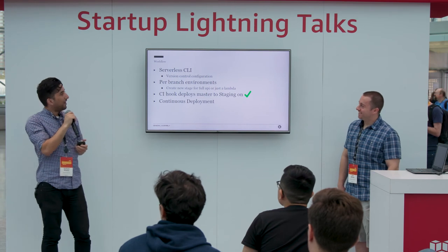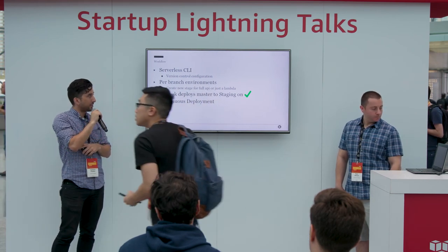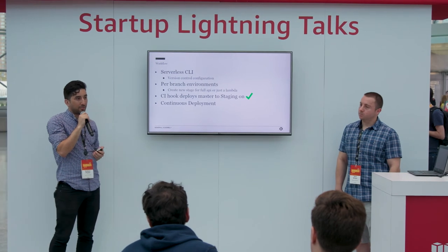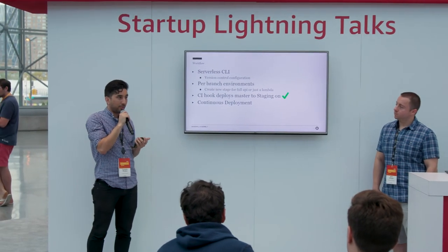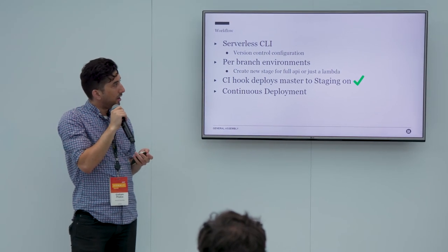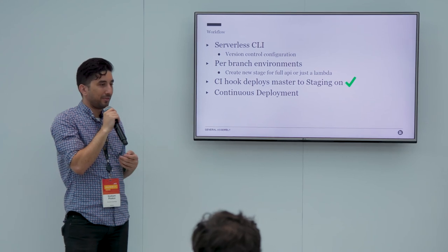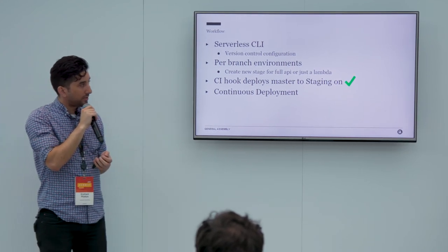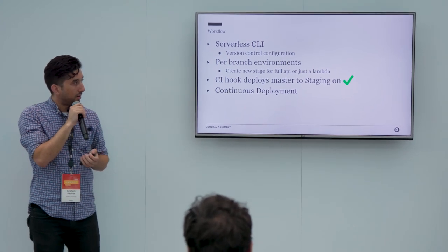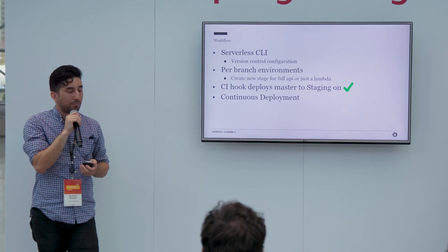Our workflow right now uses the serverless CLI, which gives us configuration in version control, which is really nice. It also gives us per-branch environments — it's really easy with serverless CLI to stand up a new environment, either for the entire gateway or just a single Lambda if you want to test that. So we have sandbox, staging, and production environments, as well as branch environments to run against branch environments of the React app. Once something goes to master, we have CI hooks that pick it up, and as soon as it's green it gets deployed out to our staging branch. That flow we find to be really good for our productivity.